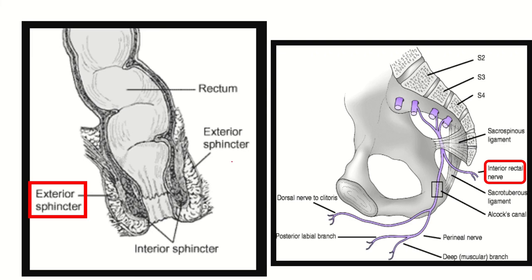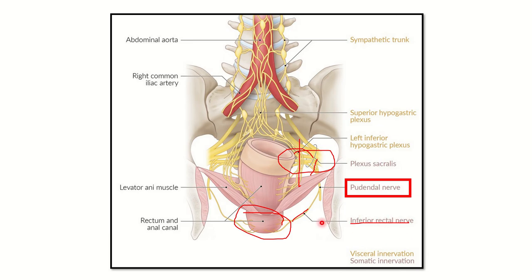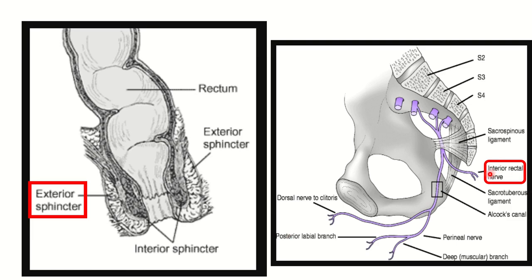In the picture, the external anal sphincter encircles the whole anal canal. Inside it is the internal anal sphincter, which receives autonomic nerve supply. The inferior rectal nerve arises from the pudendal nerve, and the pudendal nerve arises from three roots: sacral 2, sacral 3, and sacral 4. Therefore, the inferior rectal nerve — branch of the pudendal nerve — arrives from S2, S3, and S4, and the external anal sphincter is supplied by sacral 2, sacral 3, and sacral 4.